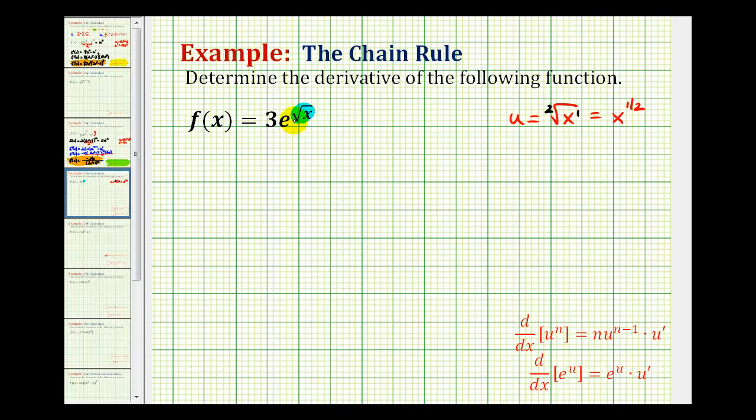So if our exponent is equal to u, we can now rewrite this as 3e to the power of u. And now it's in the form where we can apply the chain rule, which at this point in the class is built into our derivative formula, expressed as e to the u.